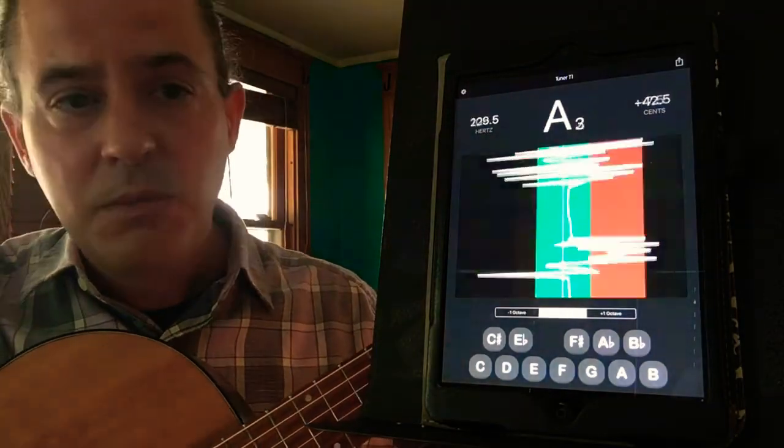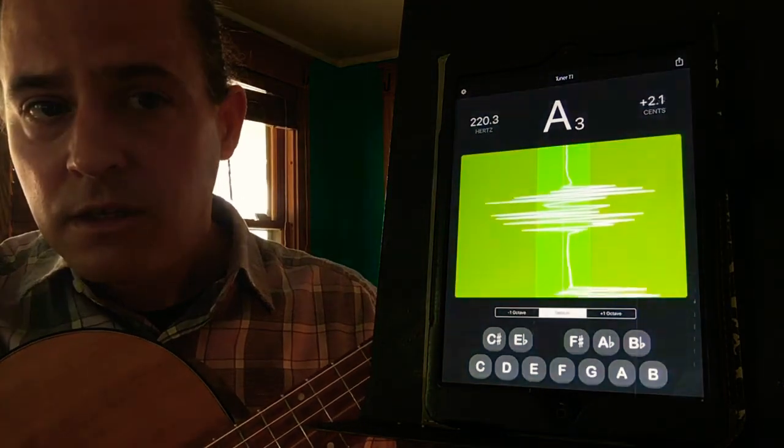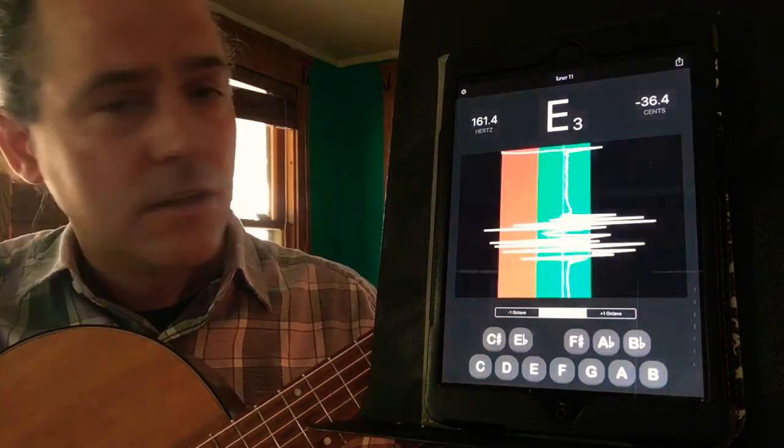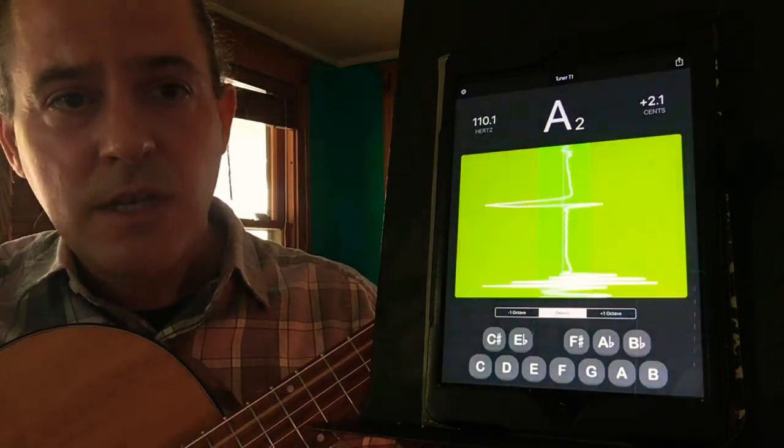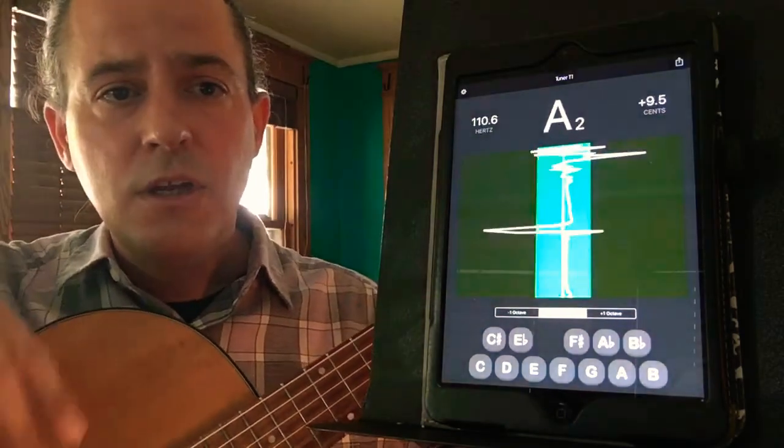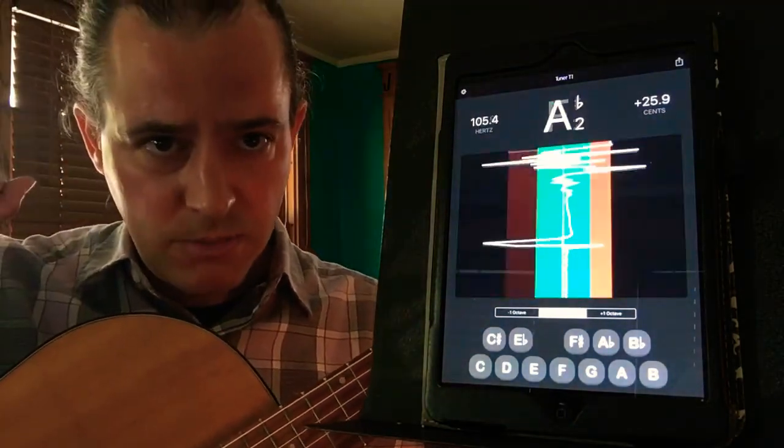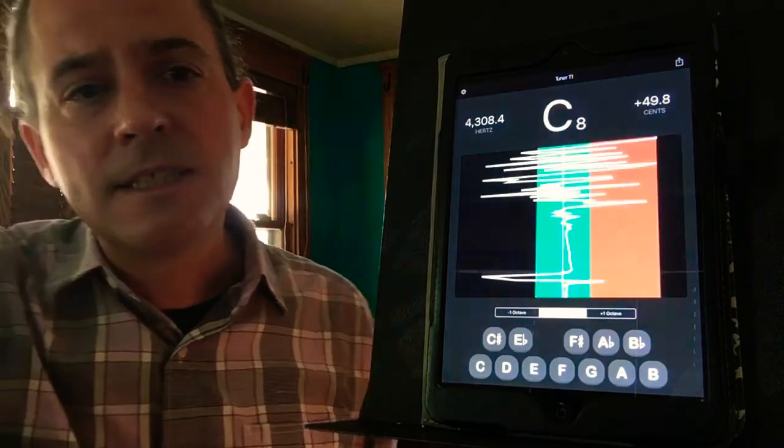A lower pitch here would be A220, A110, and if we kept going down, the numbers go up and down as the pitches go up and down, and that gives us a way to be super exact when we're tuning.